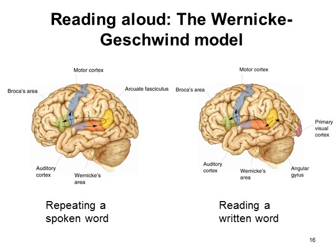Children tend to learn to speak before they can read, learning by hearing their parents and repeating. The ability to read out loud is different and requires the primary visual cortex to be activated. That sends synapses to the angular gyrus, which stimulates Wernicke's area, bypasses the auditory cortex, goes straight to Broca's area, and straight to the motor cortex. So repeating a spoken word requires hearing it first, whereas reading a written word requires the visual cortex to identify what you're seeing, process the words in Wernicke's area, then stimulate Broca's area to speak.